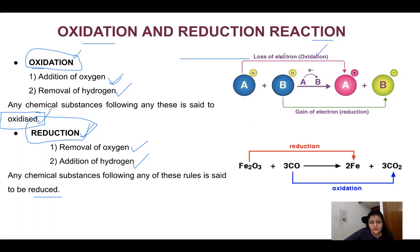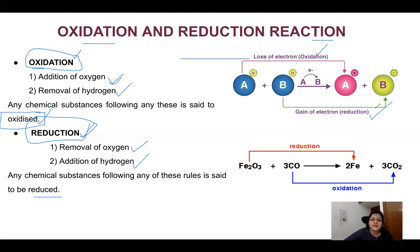When electrons are lost, we call it oxidation. And when electrons are gained, we call it reduction, and the substance is said to be reduced. Basically, we are going to focus on the addition of oxygen and the removal of hydrogen as the key definitions here.